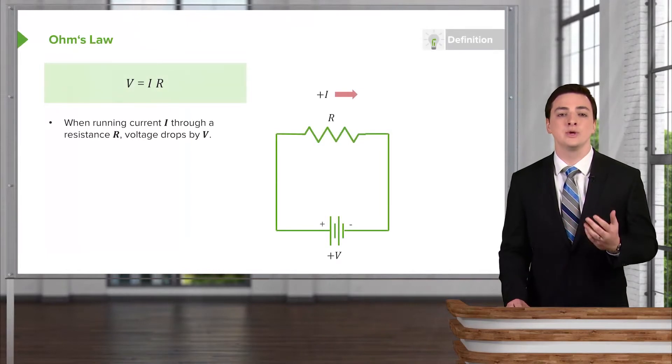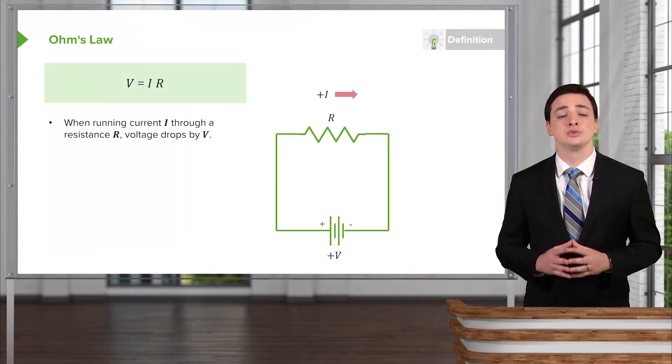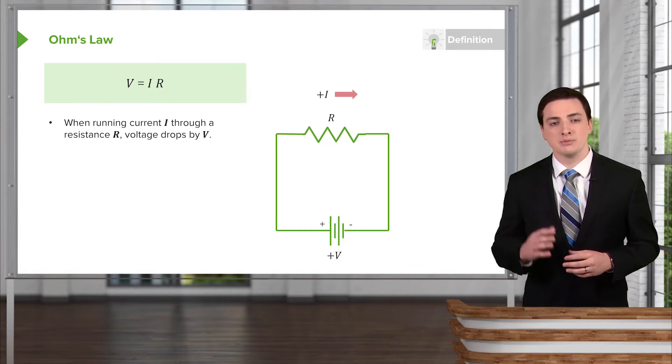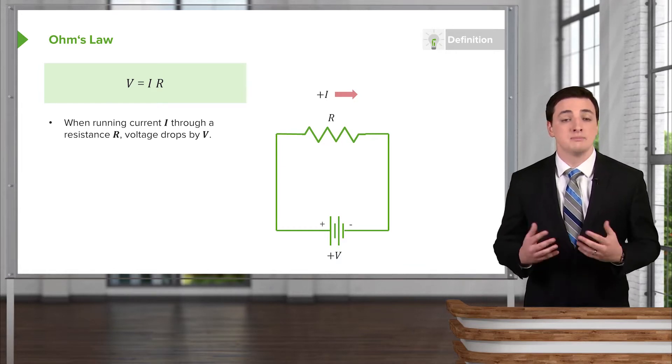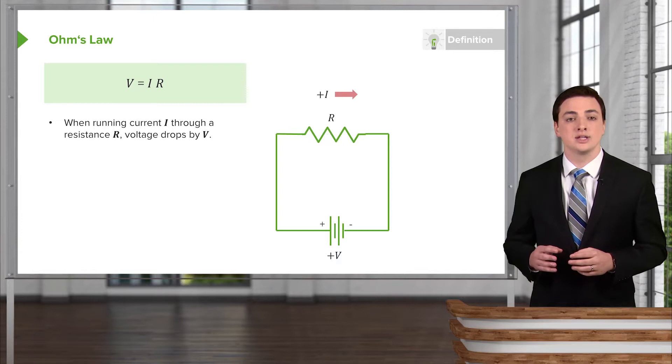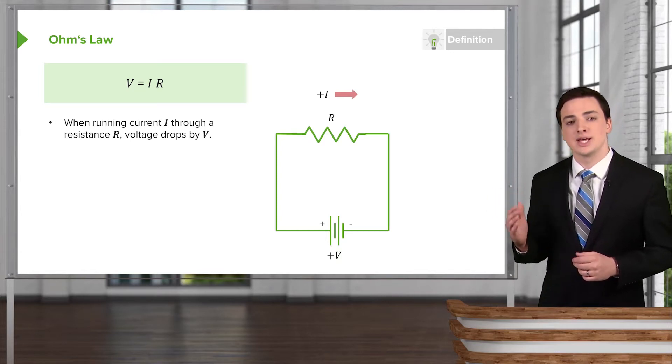It's just a rearranging of the equation we introduced for resistance. By multiplying both sides of the equation for resistance by the resistance, we have an equation that looks like this: V equals IR.